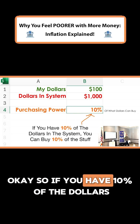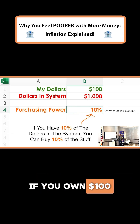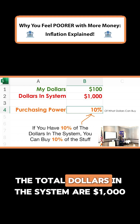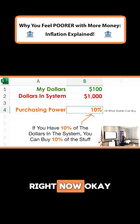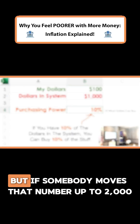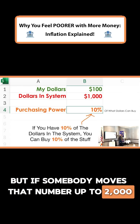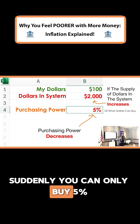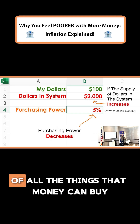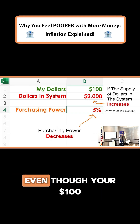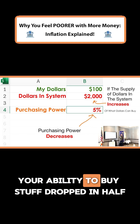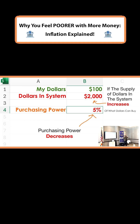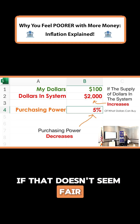So if you own a hundred dollars and the total dollars in the system are a thousand dollars, you can buy 10% of everything that money can buy right now. But if somebody moves that number up to 2,000, suddenly you can only buy 5% of all the things that money can buy. Even though your $100 didn't change, your ability to buy stuff dropped in half due to factors outside of your control. If that doesn't seem fair — it's not.